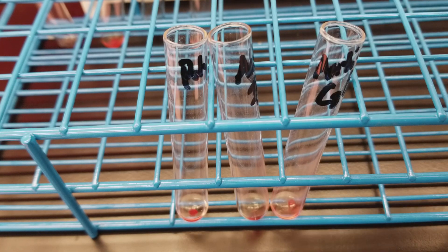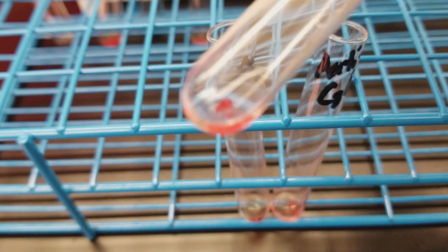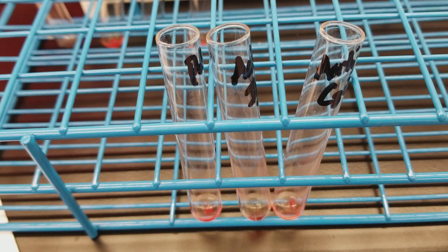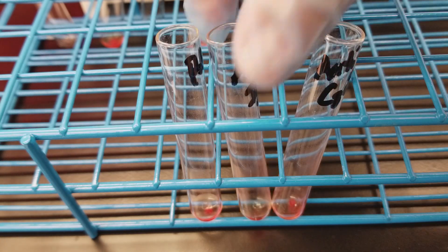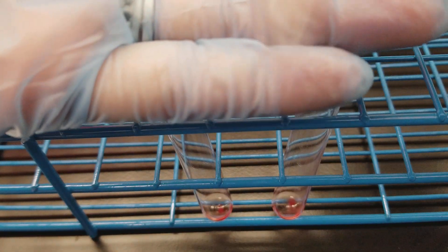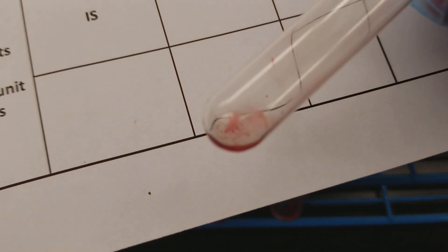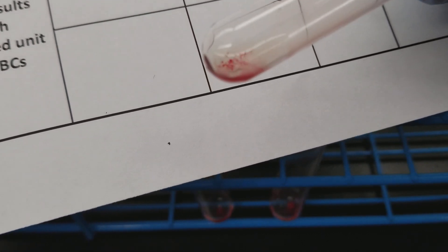We're back and I just got these out of the centrifuge. So the poly is very positive. We got a three. So we're going to write that down. Three plus poly. And then we have a positive, but not so strong of a positive of the IgG. We're going to call that a one or a two. Let's go two.